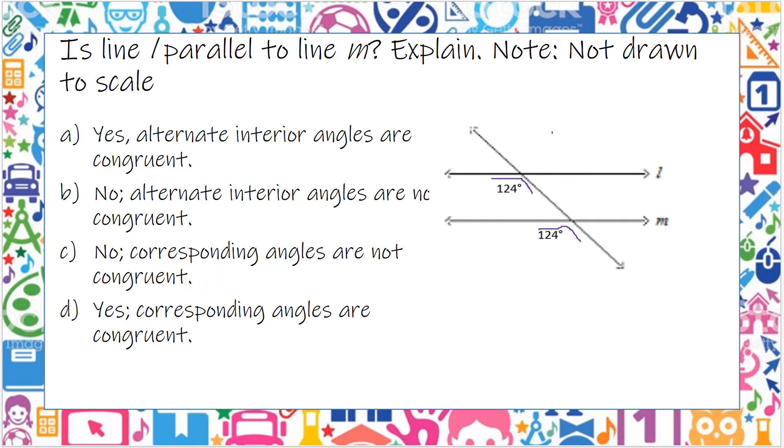Notice here that 124 is on the interior, and this 124 is exterior. So it can't be alternate interior or alternate exterior. But it could still be corresponding.